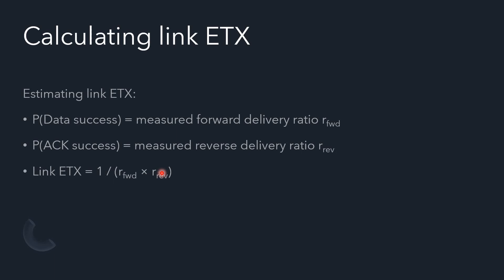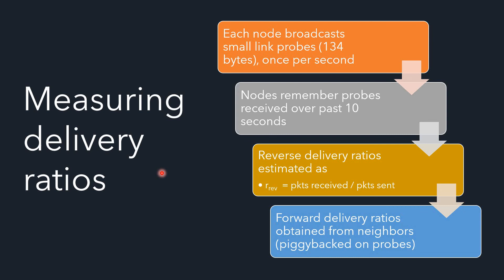At the beginning, each node in the network broadcasts small link probes — packets of 134 bytes sent once per second. Nodes remember probes received over the past 10 seconds. If a packet takes more than 10 seconds to return, that packet's transmission count cannot be calculated, though usually packets travel much faster. The reverse delivery ratio is first estimated as packets received divided by packets sent.